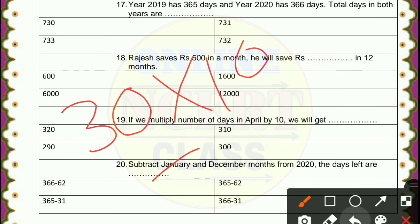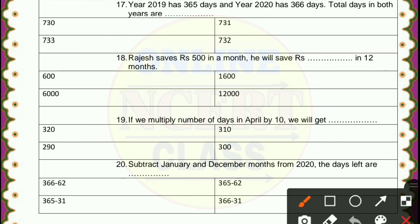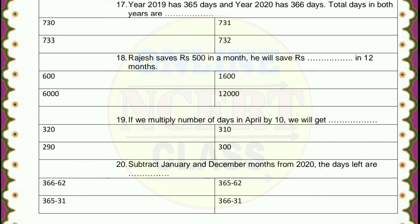Last question: subtract January and December months from 2020 — how many days are left? It will be 366 minus 62, because the year 2020 is a leap year, so it has 366 days. January and December each have 31 days, so 31 plus 31 equals 62. Therefore, 366 minus 62 is the correct answer. I hope this is helpful for your study. Share with your friends. This is all for today's class. We will meet in our next class. Thank you.